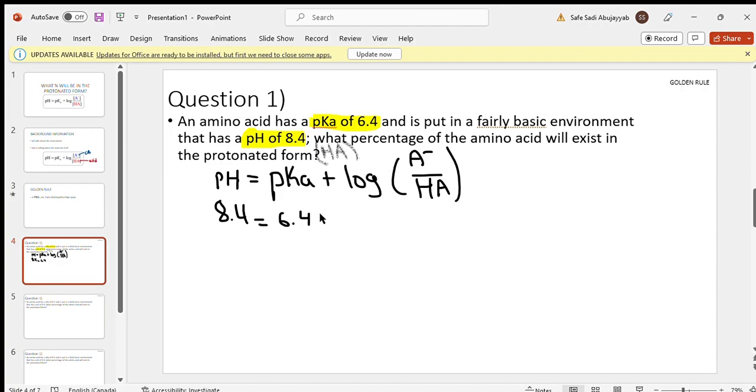All we're going to do is isolate for HA, so we just do a little bit of math. We're going to move pKa to this side, so that means we have to subtract it. This becomes 8.4 minus 6.4, which is just 2.